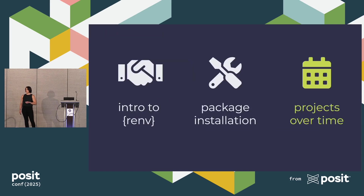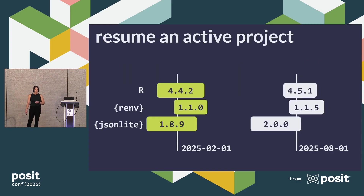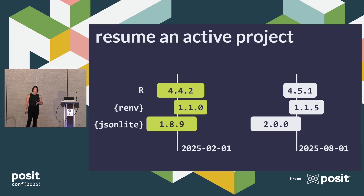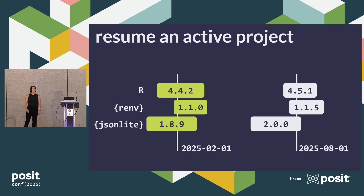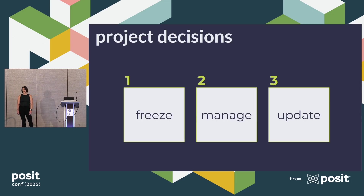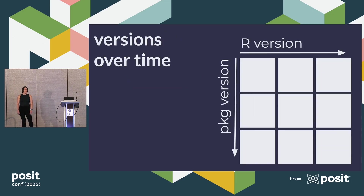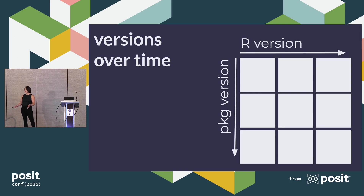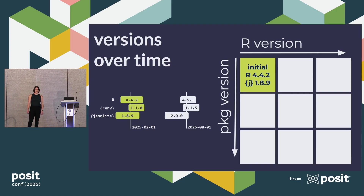Now let's talk about projects over time. I'm going to pick up this project six months later, in August of this year, and actively work on it. When I pick it up, the entire ecosystem has changed: there's a new version of R, a new version of RNV, and a new version of JSON Lite. I have to make some project decisions: freeze, manage, or update. We'll think about this in a versions-over-time map, where one axis is R version increasing and the other is package version increasing. Our initial project starts in the top-left corner with R 4.4.2 and JSON Lite 1.8.9.